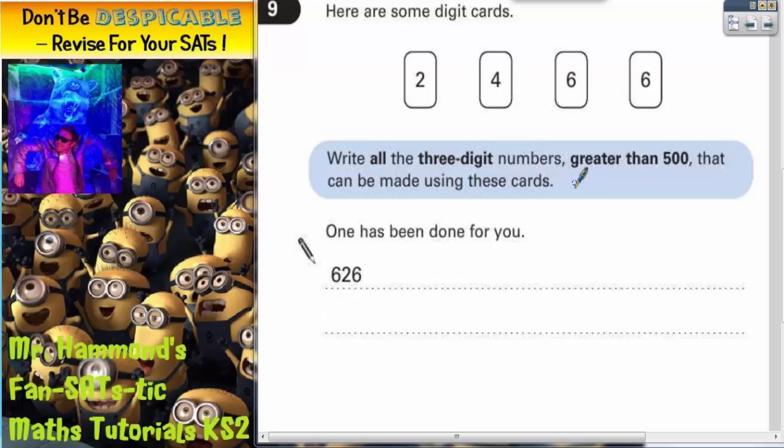Well actually, if the numbers we choose have got to be greater than 500, it's got to begin with a 6. It's got to be 600 and something. Because the only other things it could begin with would be 200 and something, which is not greater than 500, or 400 and something, which is also not greater than 500. So we're going to have to begin with a 6. Must start with a 6.